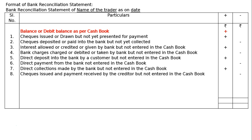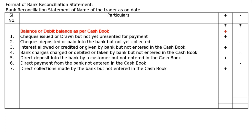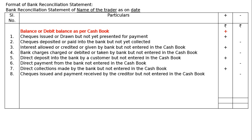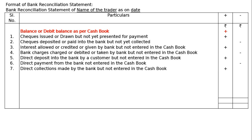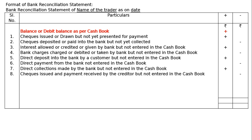The eighth item is checks issued and payment received by the creditor but not entered in the cash book. At times we forget to record drawn or issued checks. The creditor took payment from the bank, but we have not entered it in the cash book, so we have to deduct it from the cash book balance.